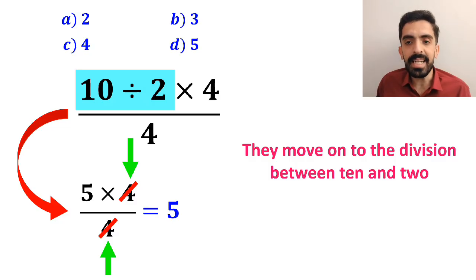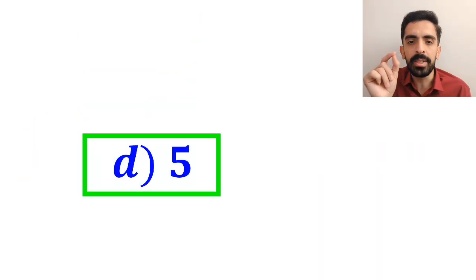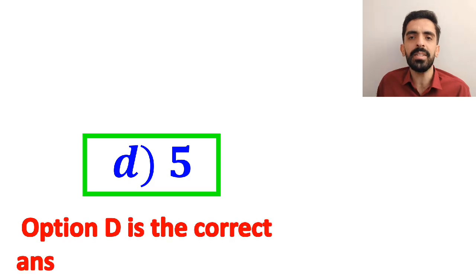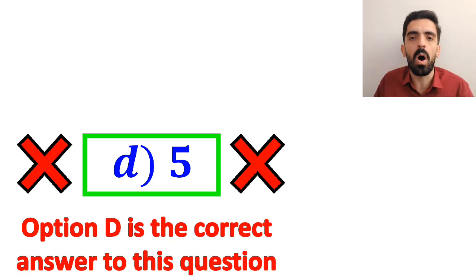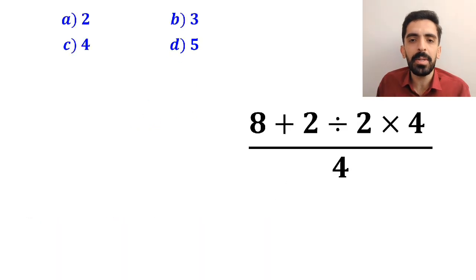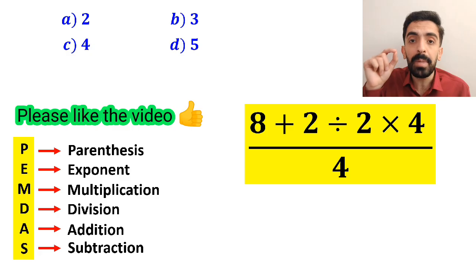Without any hesitation, they quickly conclude that option D is the correct answer to this question. But it's completely wrong. Now let me walk you through step by step how to solve this expression properly. To solve this question, we must strictly follow the steps outlined by the PEMDAS rule.